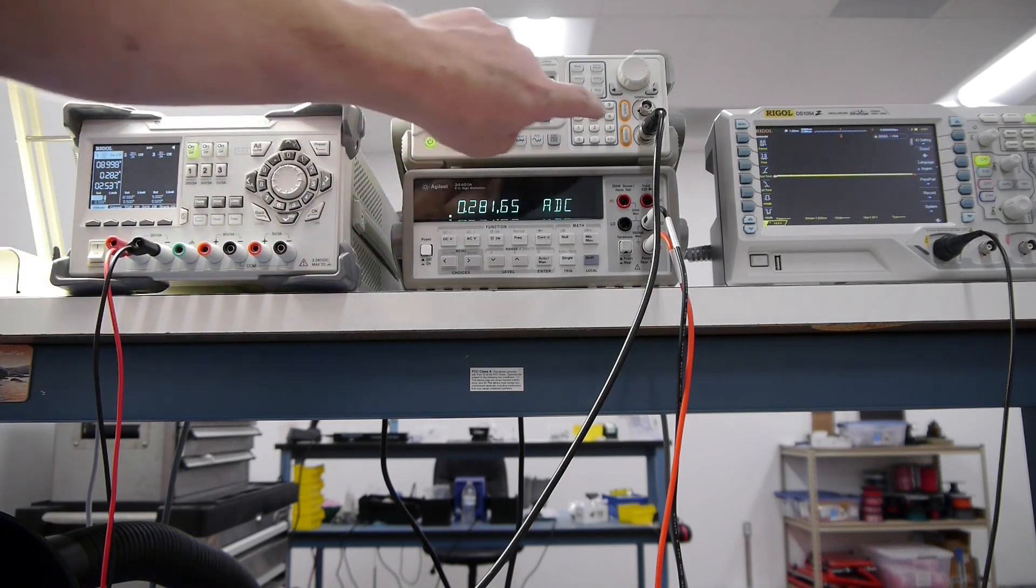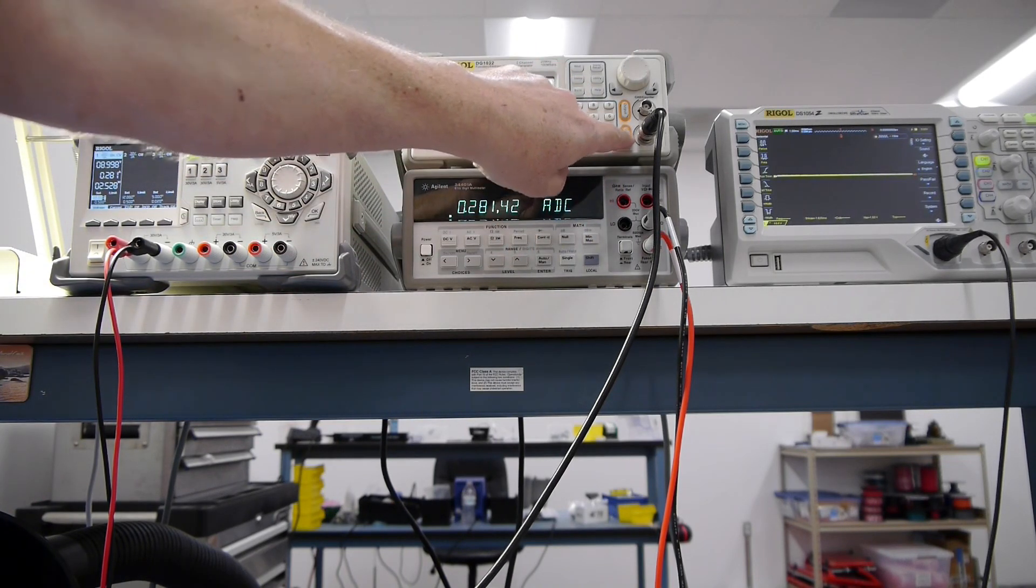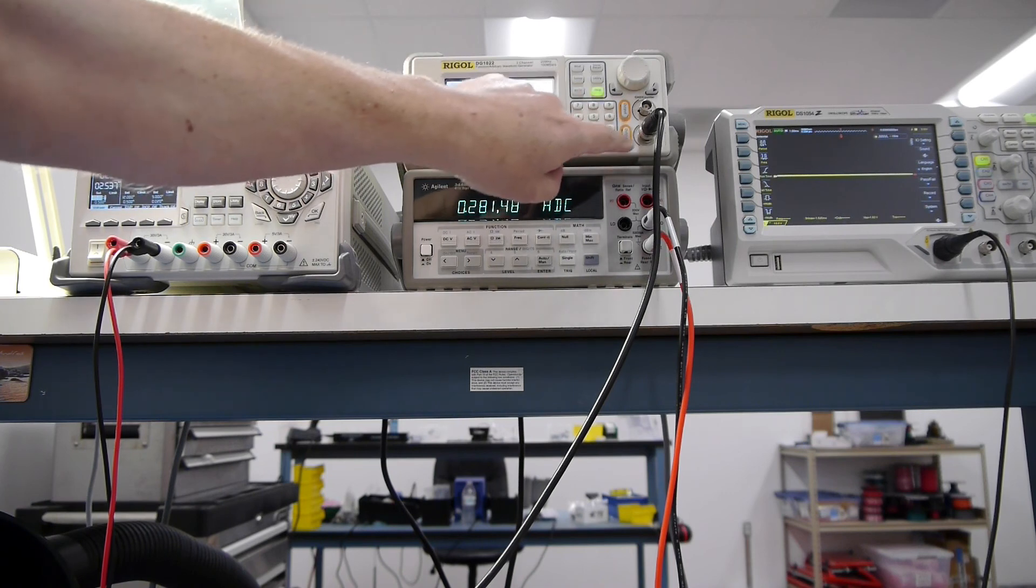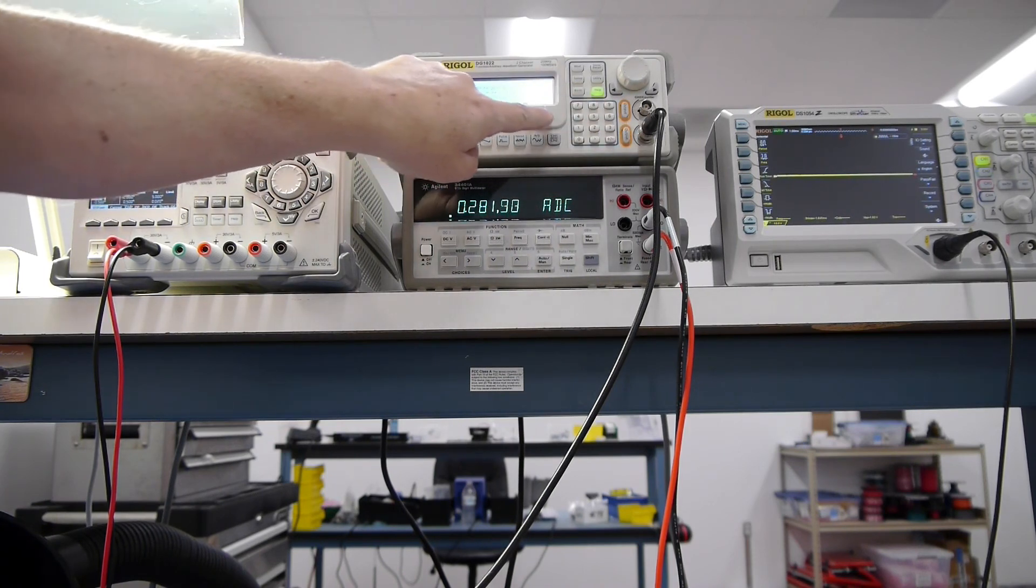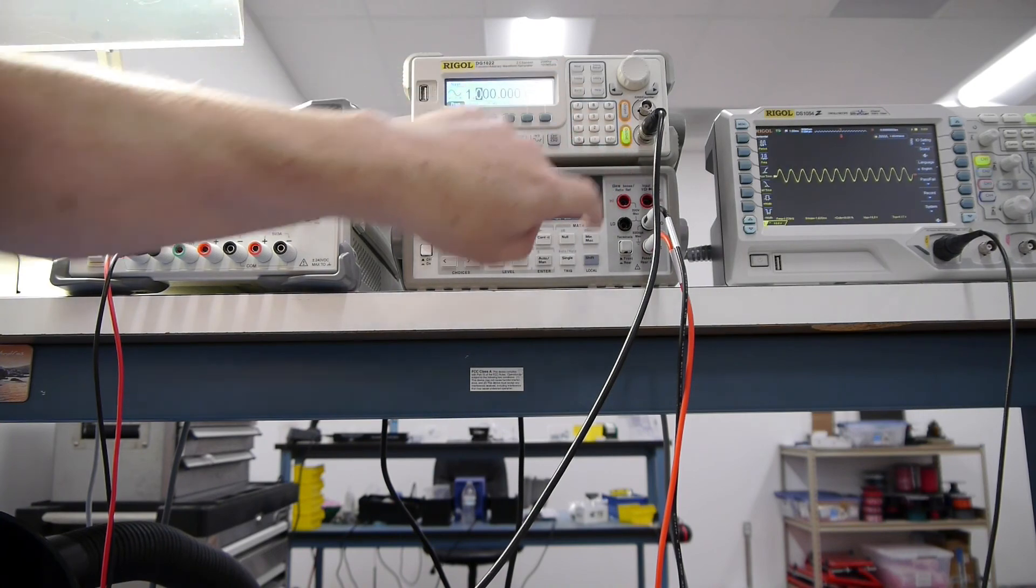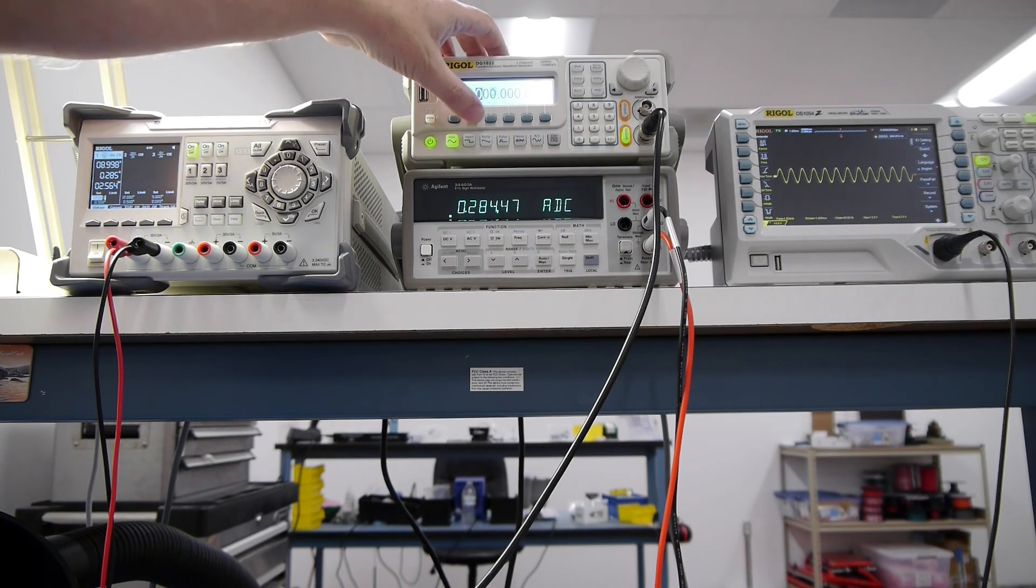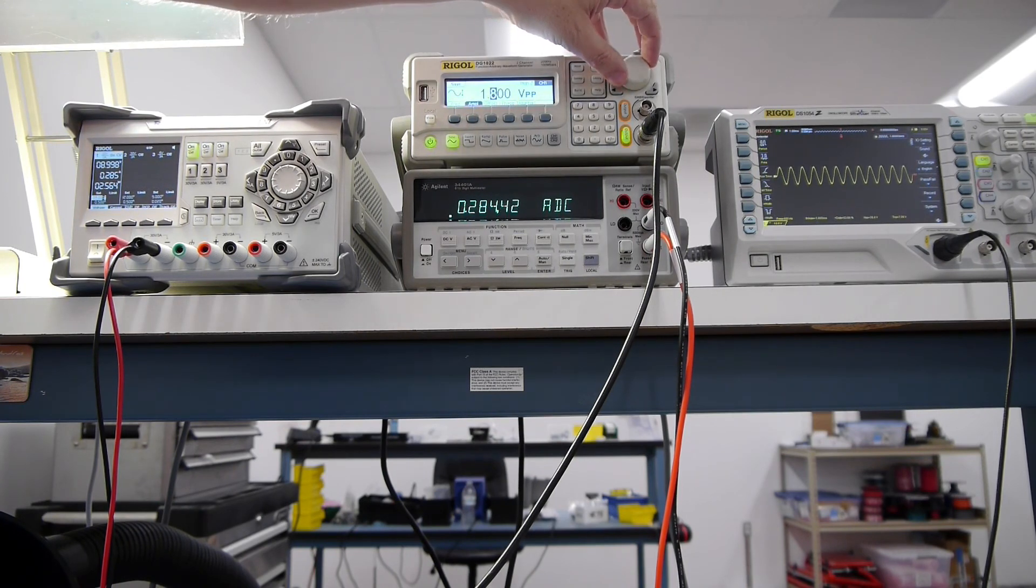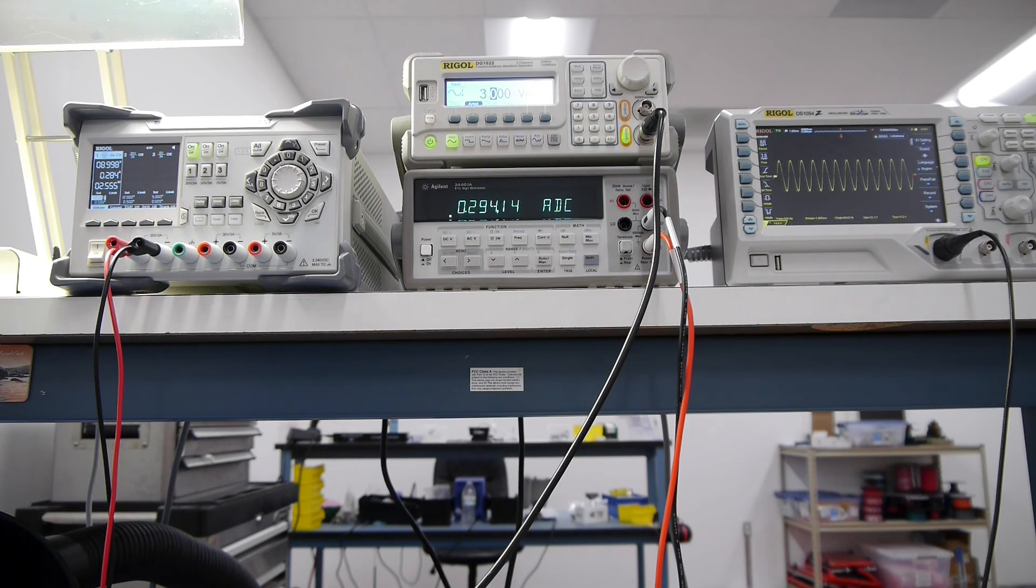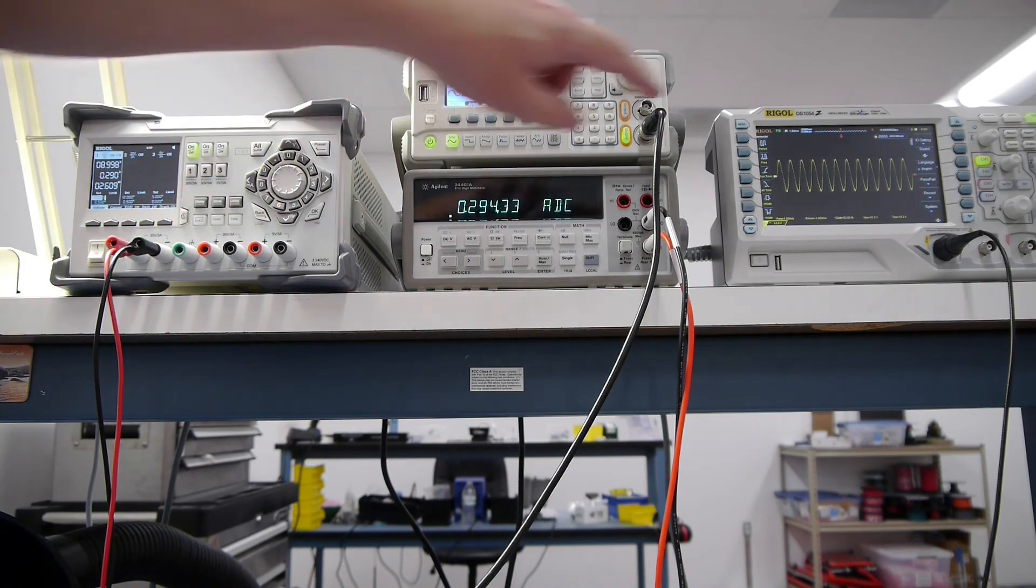Let's turn on the signal generator. All right, so I'm sending a 1kHz signal to the scope. Let's crank it up just a little bit so we can see it a little better.